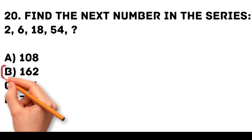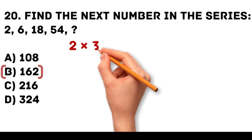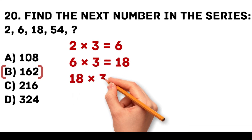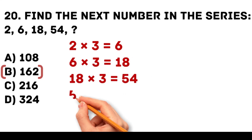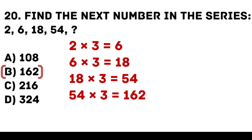Answer: B. 162. Each number in the series is multiplied by 3. 2 times 3 is equal to 6. 6 times 3 is equal to 18. 18 times 3 is equal to 54. 54 times 3 is equal to 162.